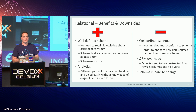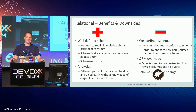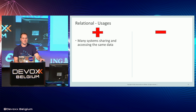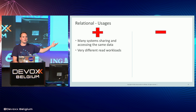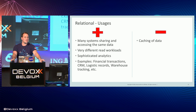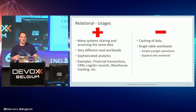Some people say schema is hard to change, but I call bullshit on that because every relational database has an ALTER TABLE ADD or DROP COLUMN. It's mostly because there are many downstream systems reading from it, and changing it would break everything — but the same would be true with a JSON document store. Usage: many systems sharing data, very different read workloads, sophisticated analysis like give me all customers over the last 12 months. Typical examples: financial services, CRM systems, warehouses. Avoid it for caching, single-table workloads, or anything where you're just appending to a table.